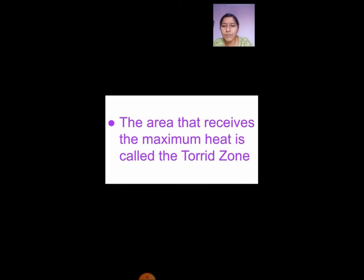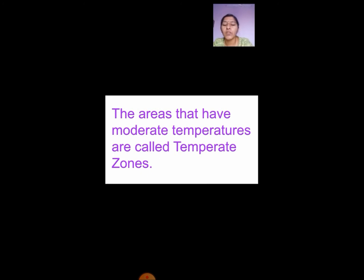The area that receives the maximum heat is called the torrid zone. It will be mostly near the equator, so near the equator you will have more heat. The areas that have moderate temperatures are called the temperate zone.